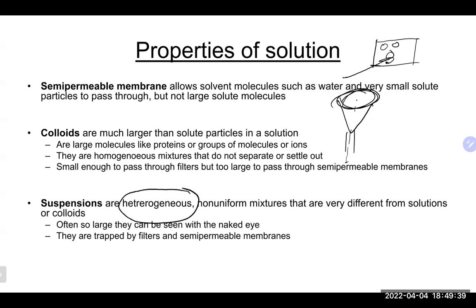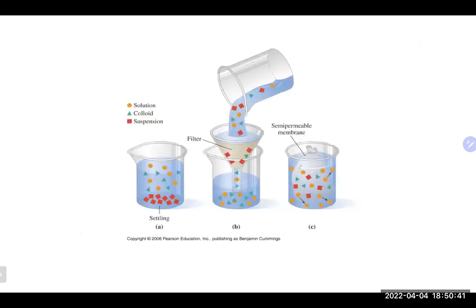Suspensions are heterogeneous mixtures — you can see different layers with the naked eye. They are too large to pass through filter paper or membranes; they get trapped everywhere. A common lab example is sand in water — you can mix it, but the sand will eventually settle to the bottom. Solutions and colloids can pass through filter paper; only solutions can pass through semipermeable membranes.